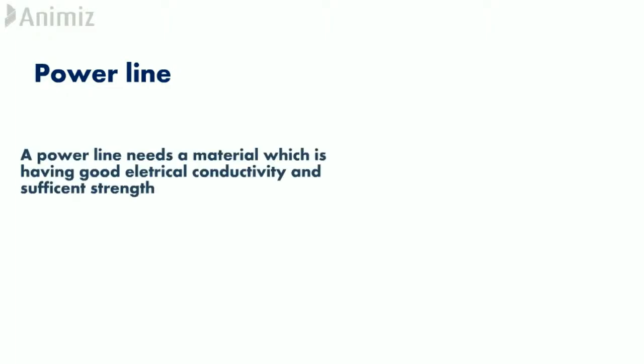If you wanted to design a power line, we need a material which has good electrical conductivity and sufficient strength. If we use aluminum, it gives you good conductivity but the strength is low.